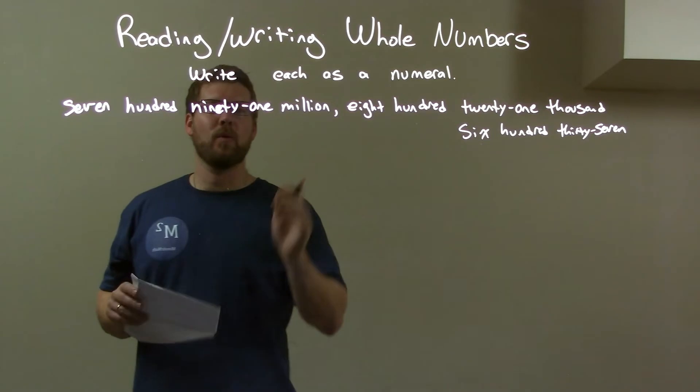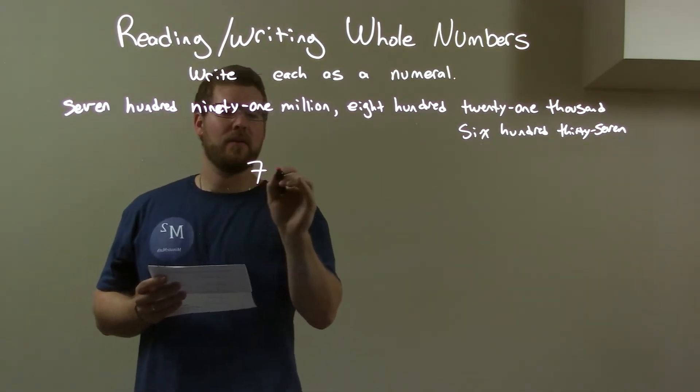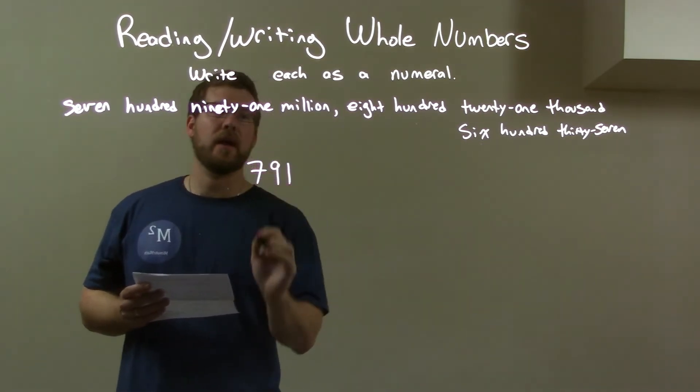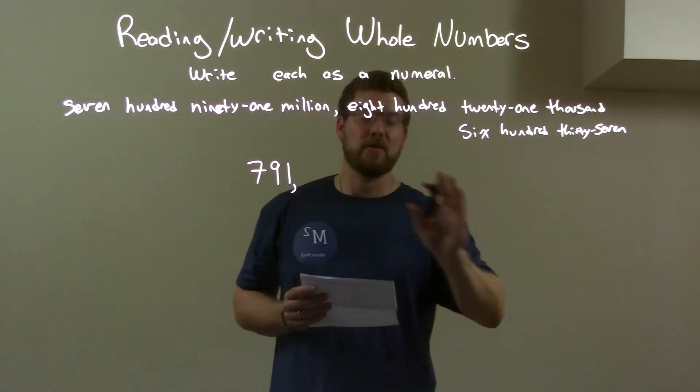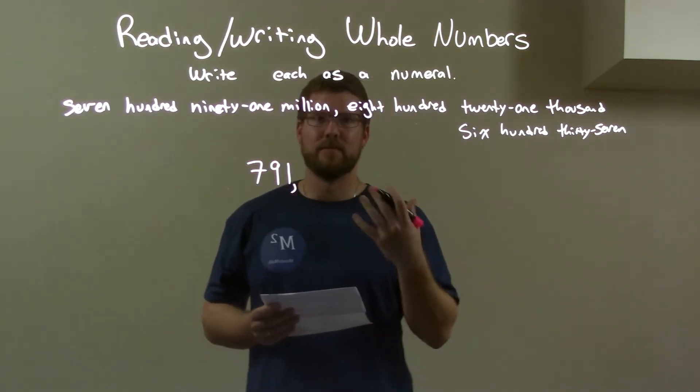We have 791 million, so we start with the 791. That's in the millions area, so that means there's six places afterwards.